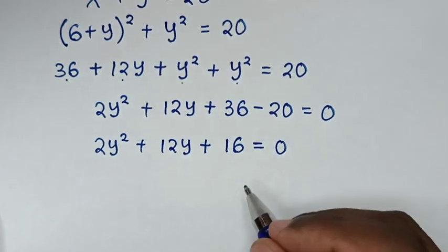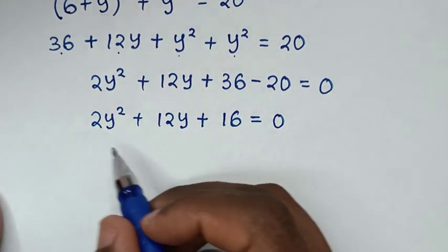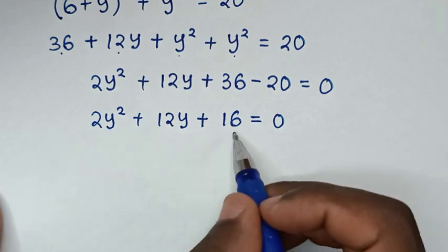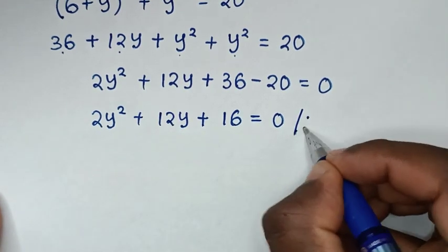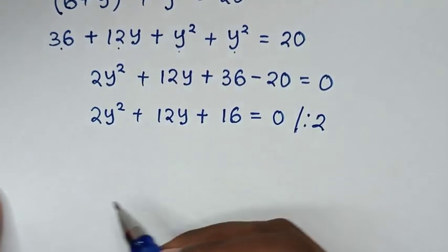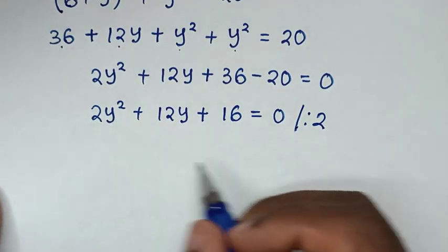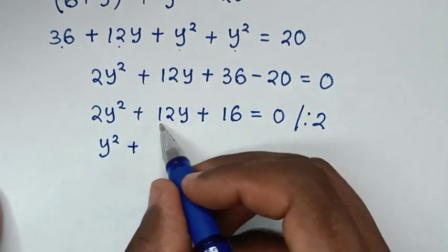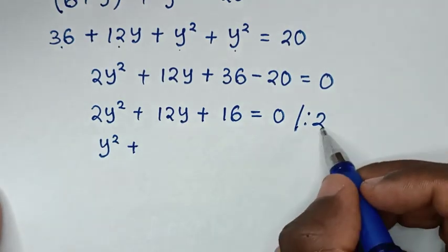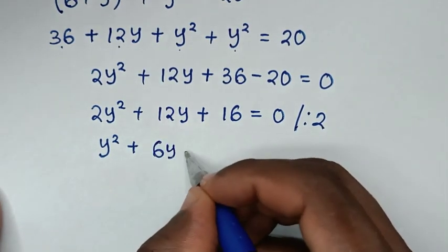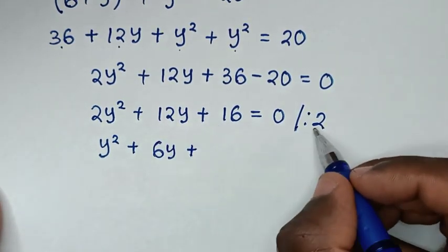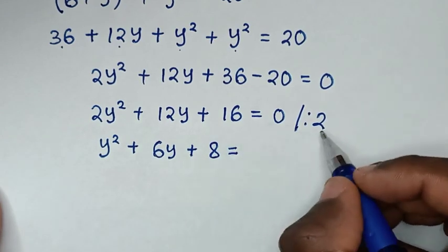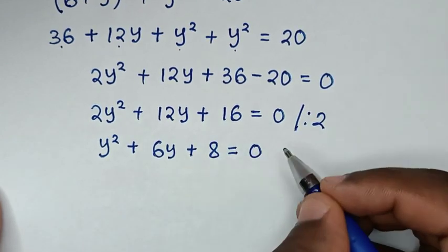This equation is divisible by 2 throughout, so we divide every term by 2. 2y squared divided by 2 is y squared, plus 12y divided by 2 is 6y, plus 16 divided by 2 is 8, equals 0.